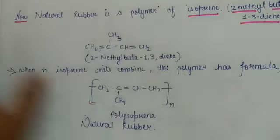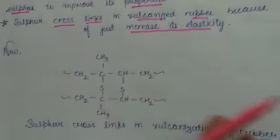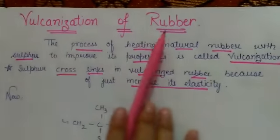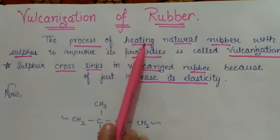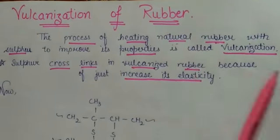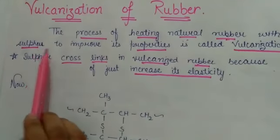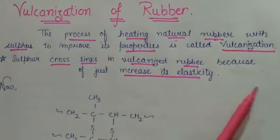Now, for natural rubber, let's discuss vulcanization of rubber. Vulcanization of rubber is a process of heating natural rubber with sulfur to improve its properties.